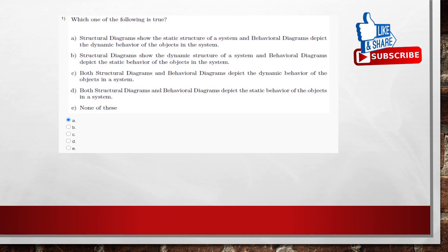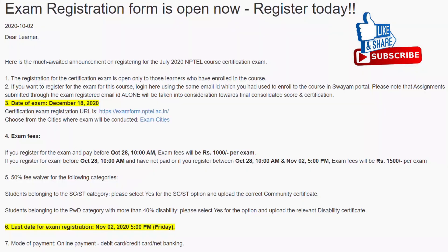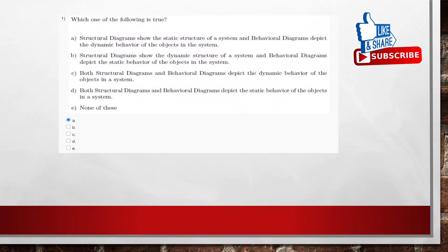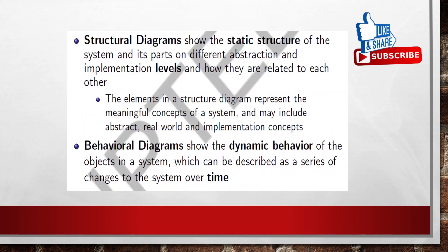Let's start Assignment 5. The first question is: which one of the following is true? Option A: Structural diagram shows the static structure of the system and behavioral diagram depicts the dynamic behaviour of the objects in the system. Option B: Structural diagram shows the dynamic structure of the system and behavioral diagram depicts the static behaviour. Option C: Both structural and behavioral diagrams depict the dynamic behaviour. Option D: Both depict the static behavior. The answer is Option A — structural diagrams show the static structure of the system and behavioral diagrams depict the dynamic behavior of the objects in the system.